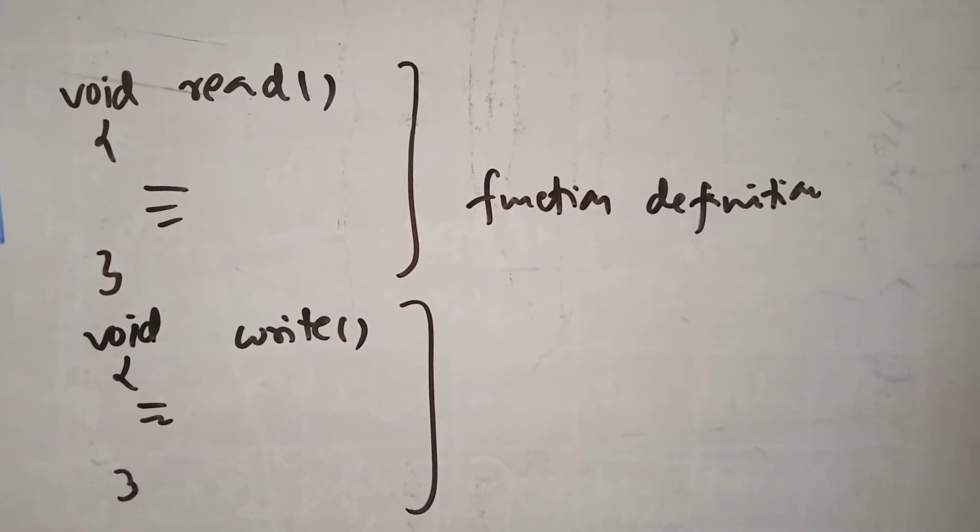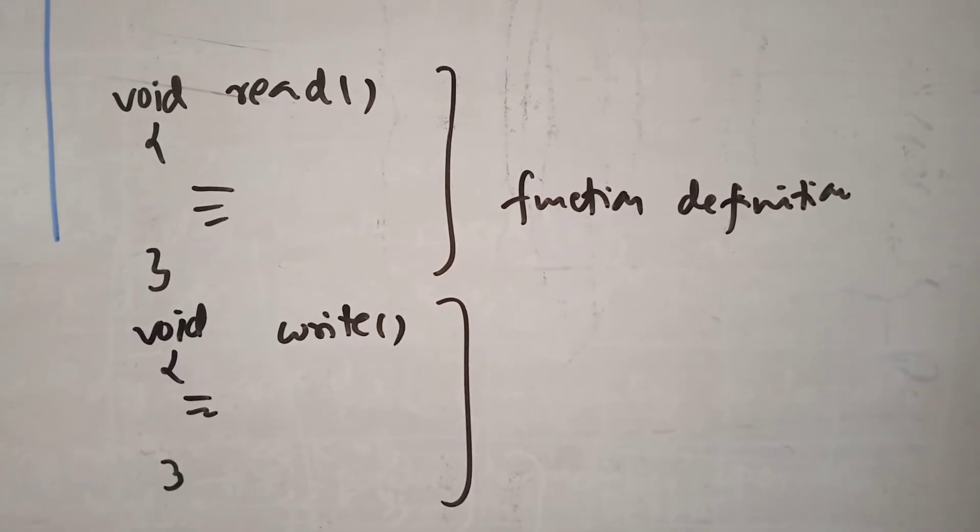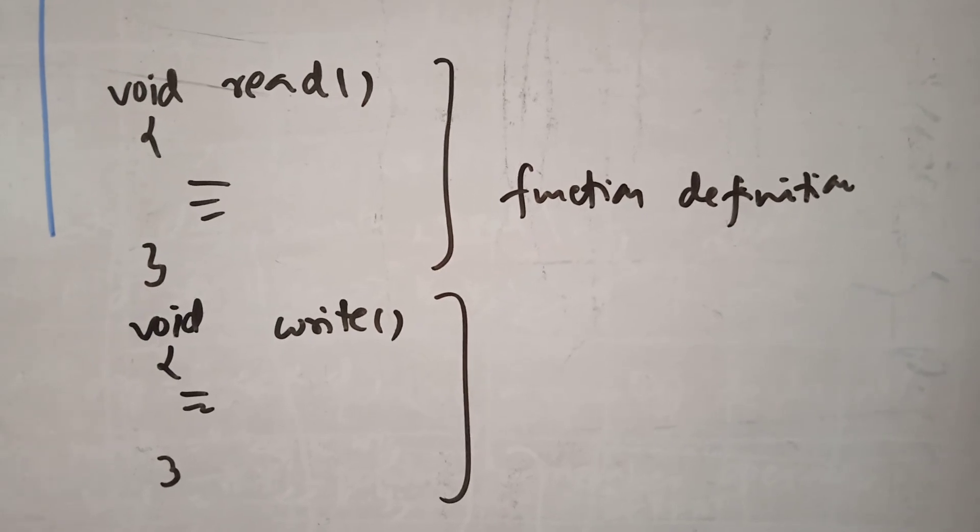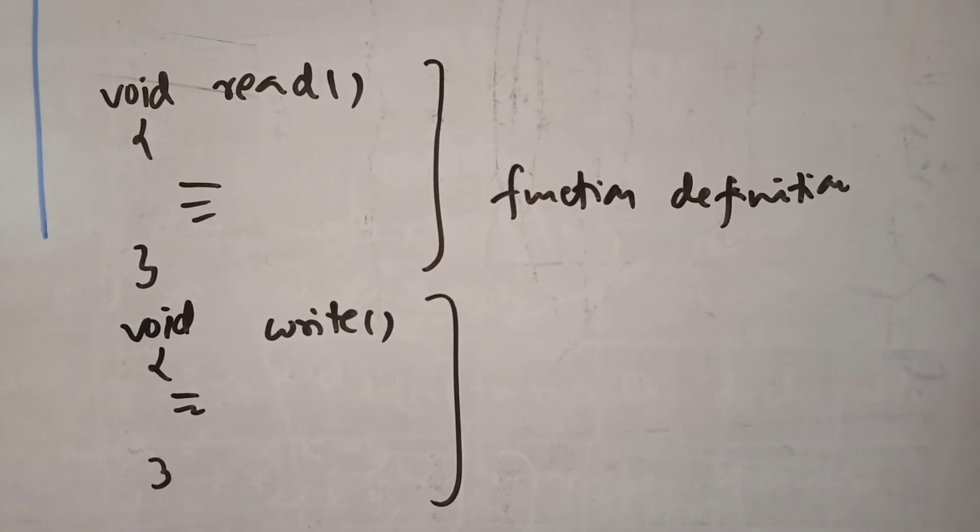But they can be accessed inside the member functions. Look at the read and write. The roll number name can be used. So the data which is private cannot be accessible outside the class, but can be accessed inside their concerned member functions.